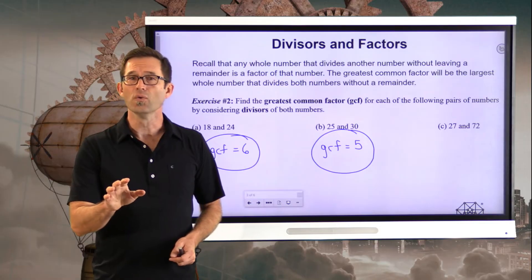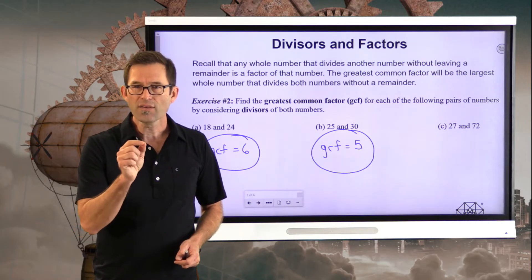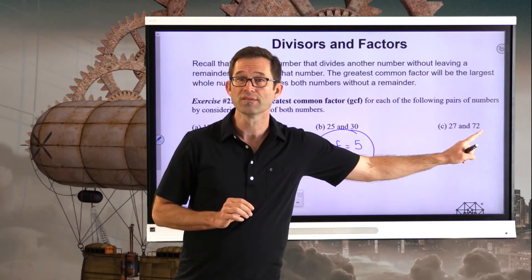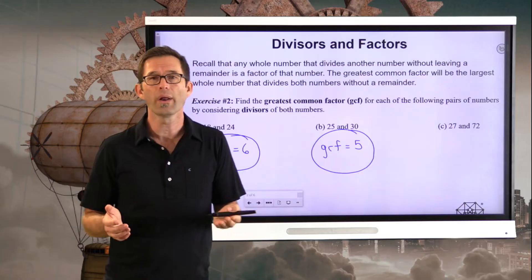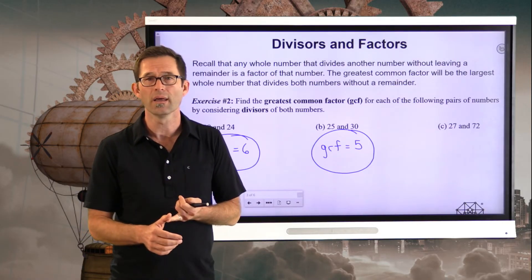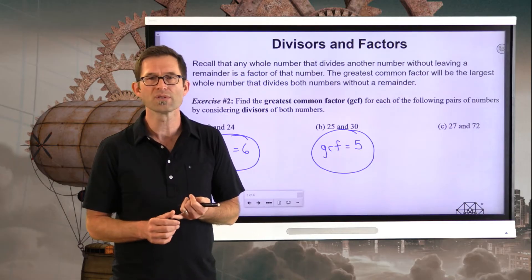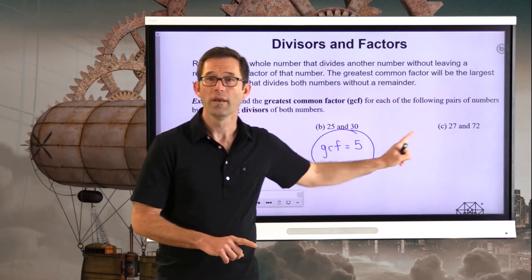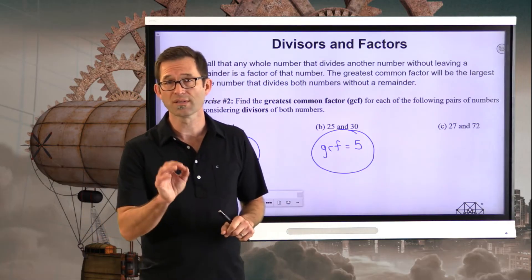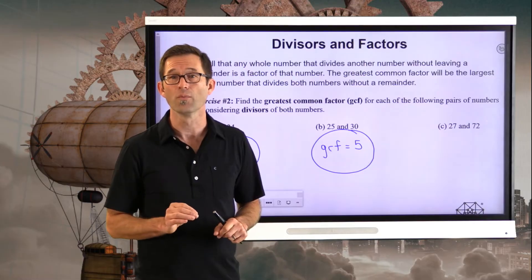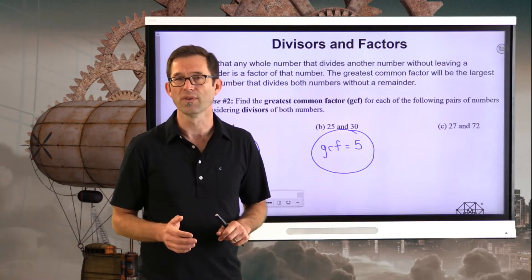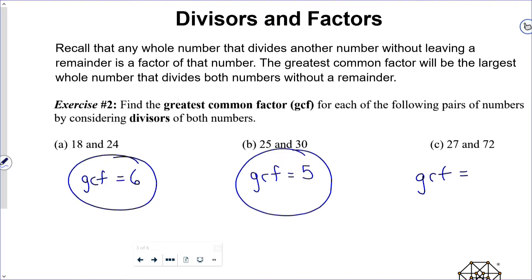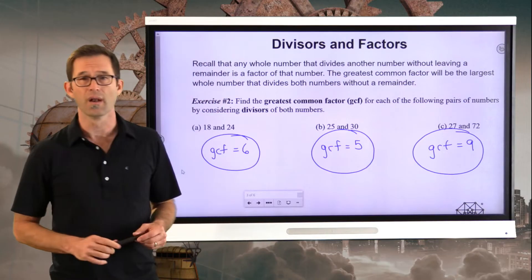Now, 27 and 72 are similar. I'd like to think about that smaller number, 27, because it's likely to have fewer factors. 27 is 1 times 27 and 3 times 9 — that's it. So the only numbers that divide into 27 are 1, 3, 9, and 27. Now, 9 certainly goes into 72 — 9 times 8 is 72. The question is, does 27 go into 72? It doesn't. So the greatest common factor — the largest number that divides into both 27 and 72 — is 9.